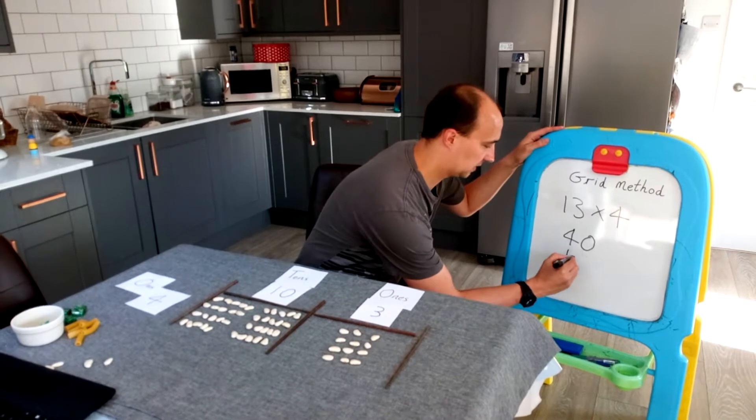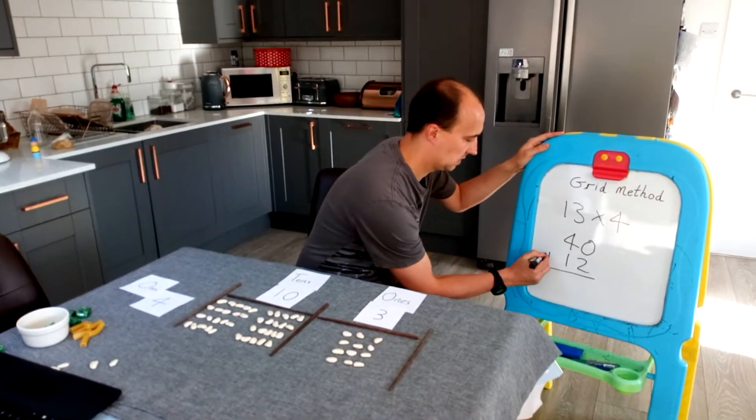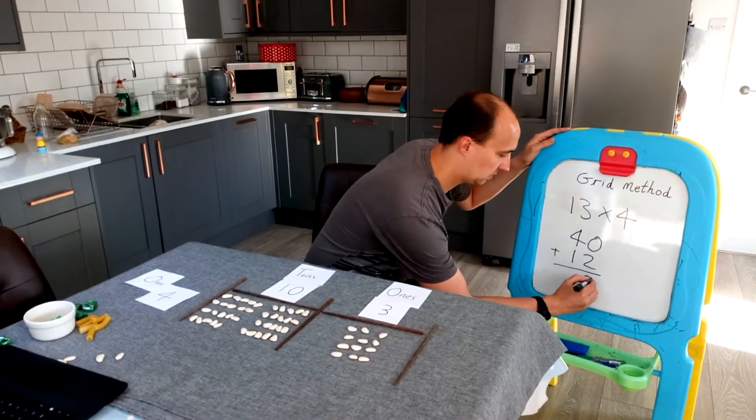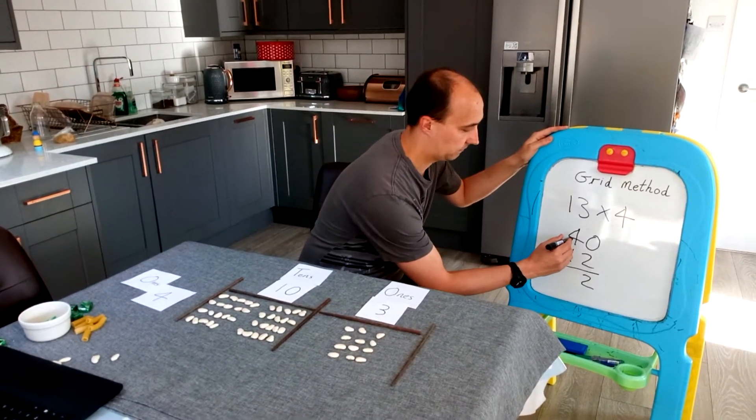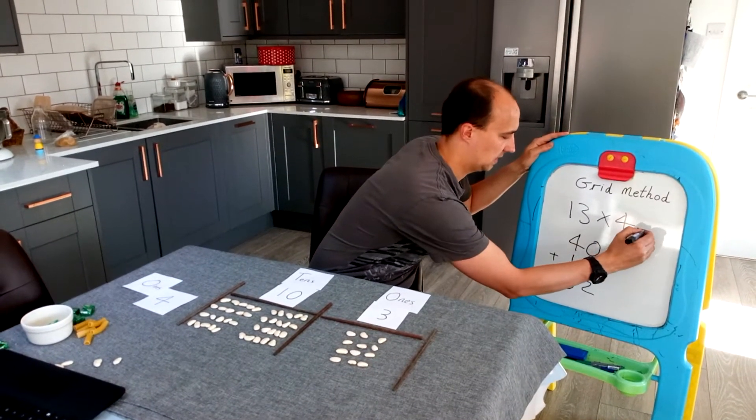Really important that the children start to learn these times tables to make this a lot easier for them. I'm just going to add up these two boxes. So I've got 0 plus 2 is 2, and 40 plus 10 is 50. So the answer there is 52.